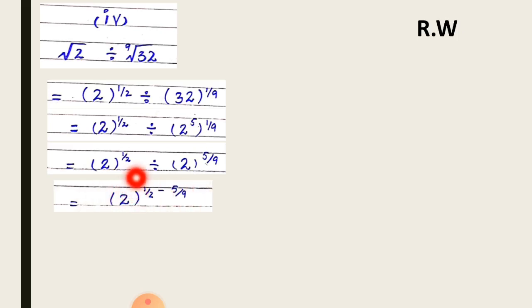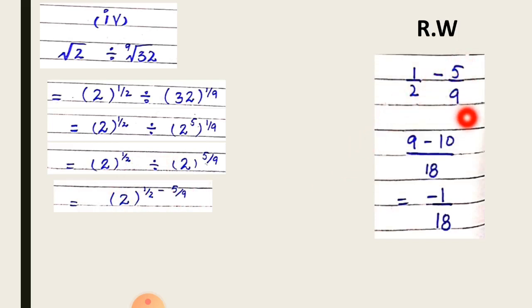So 2 on the whole power 1 by 2 minus 5 by 9. This is rough work we will solve. If we have 1 by 2 minus 5 by 9, then we will solve this. These two fractions are unlike, so first of all we need the LCM of 2 and 9, which is 18.